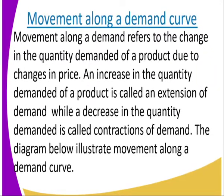We start by the movement along a demand curve. In our previous lesson, we talked about the demand curve and demand schedule. We also drew a demand curve from a demand schedule. Movement along a demand curve refers to the change in quantity demanded of a product due to the change in price. As we drew the demand curve, you saw that the quantity demanded decreases with an increase in price. That is the reason why you get that normal demand curve.